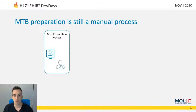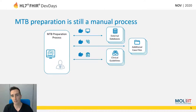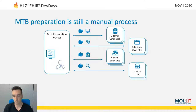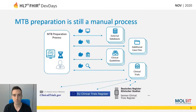Molecular tumor board preparation is still a very manual process. For example, external databases have to be queried by hand, additional case files have to be requested by phone, clinical guidelines have to be reviewed, and clinical trials suited for the patient have to be consulted. There are several sources for this — for example, the ClinicalTrials.gov register, the EU clinical trials register, and on a German level, the German clinical trials register. All of this is very time consuming and not very efficient.